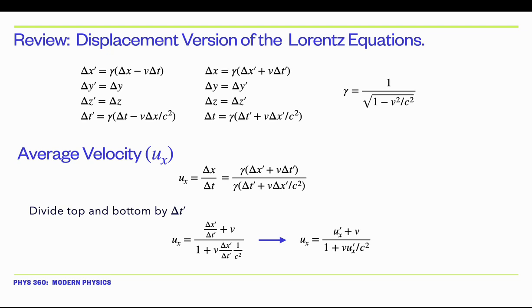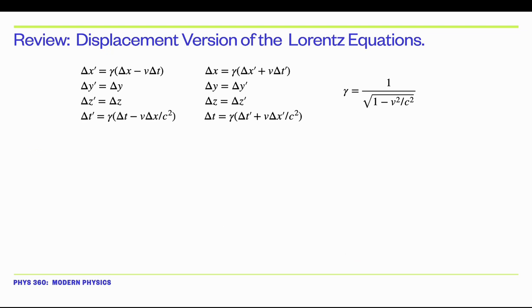Based on our definition on the previous page, delta x prime over delta t prime is just ux-prime. So that's it — that was the whole derivation.